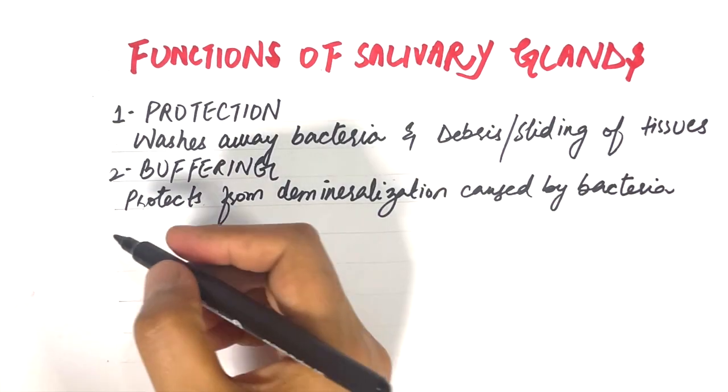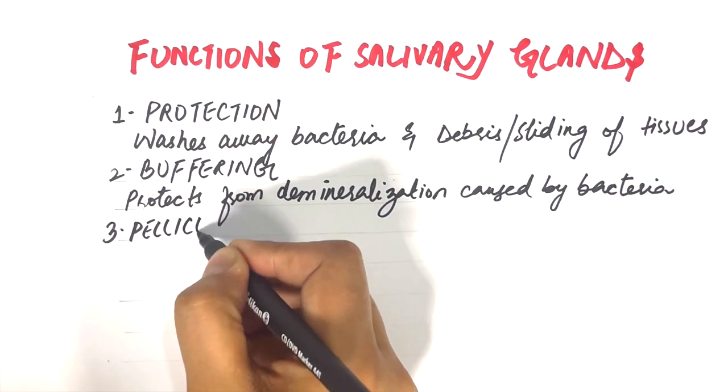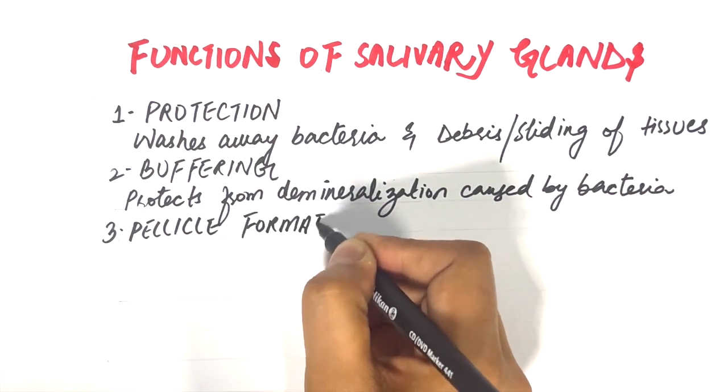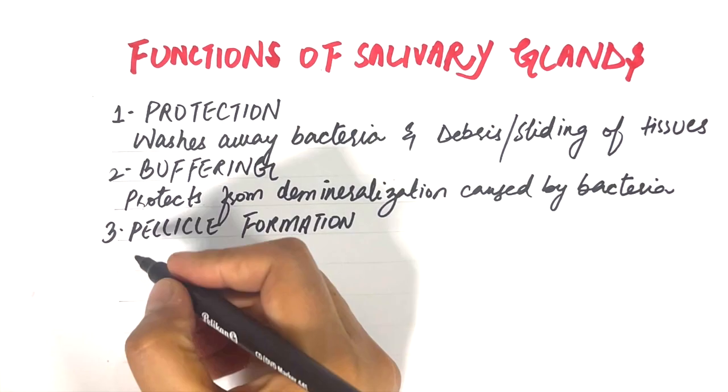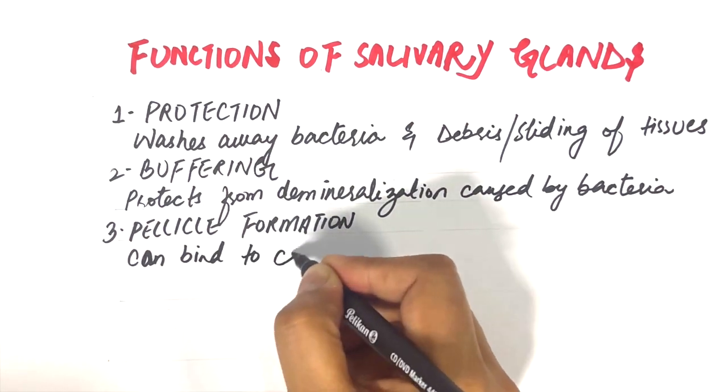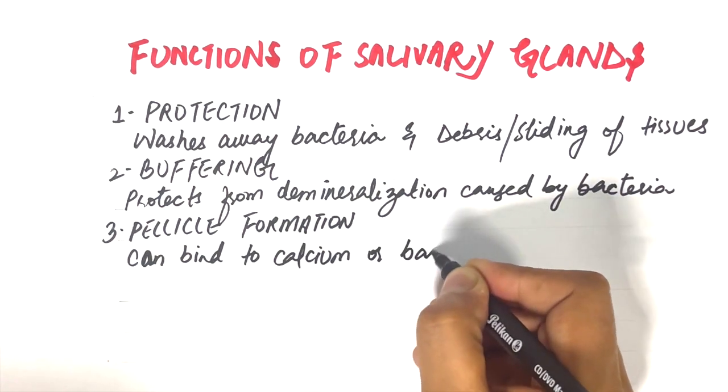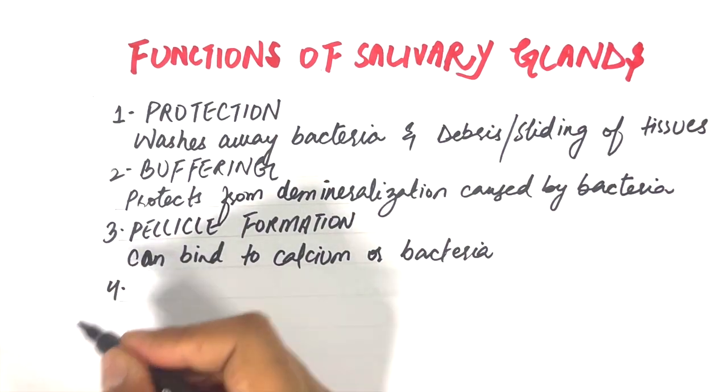Salivary proteins can bind to the surfaces of the teeth and oral mucosa, forming a thin film called the salivary pellicle. Some proteins of the salivary pellicle can bind to calcium and help to protect the tooth surface. However, some other proteins of the pellicle provide a suitable binding site for oral bacteria, which causes the initial attachment for organisms that form dental plaque.